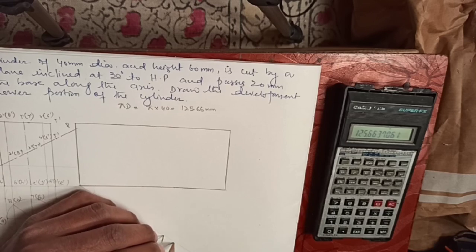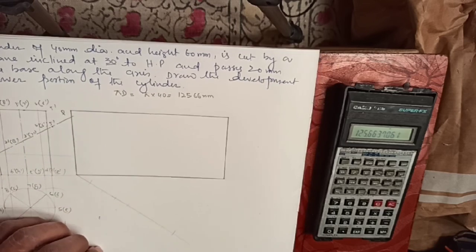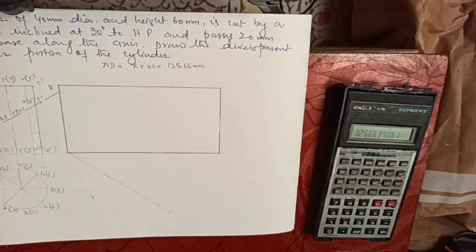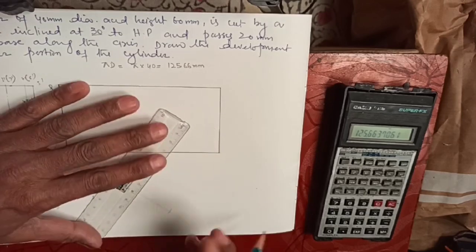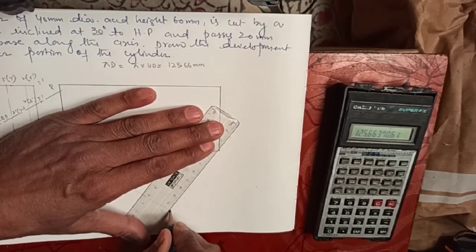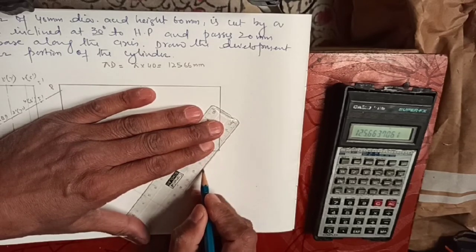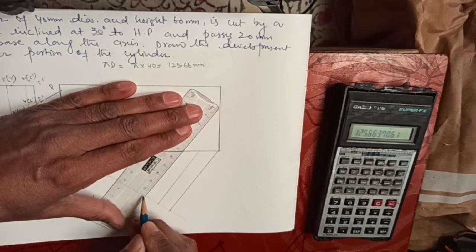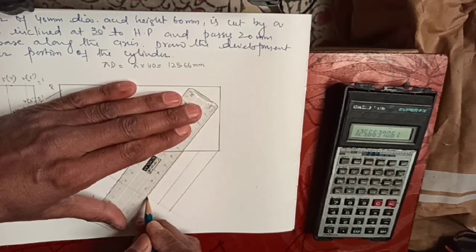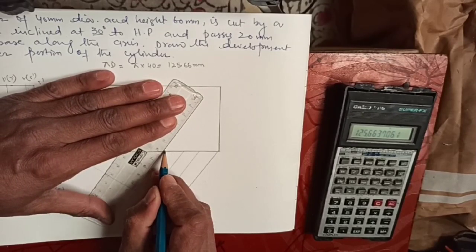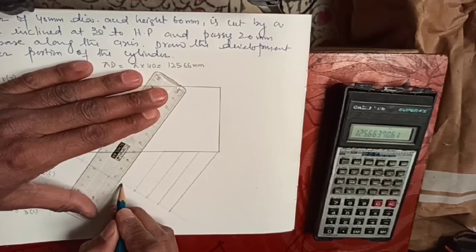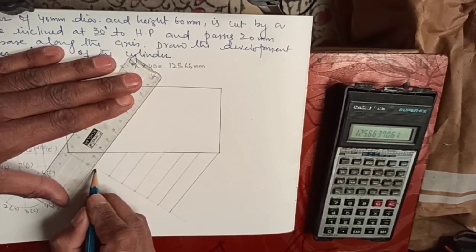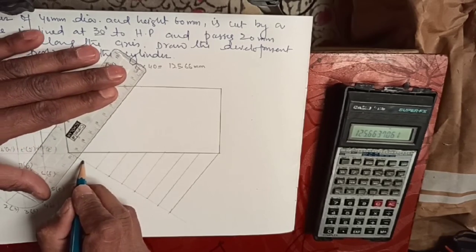We also know the height is 60 mm, so draw 60 mm from each end using a mini drafter for accurate lines, then close the rectangle — that is what we did in the previous class. Now, since the base is divided into eight equal parts, we have to divide this unwrapped sheet into eight equal parts as well.